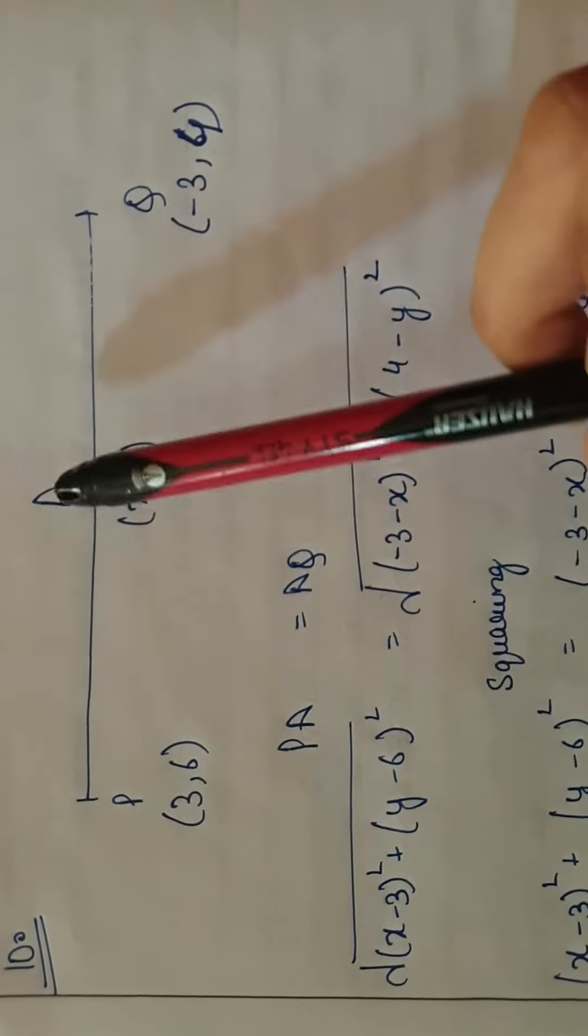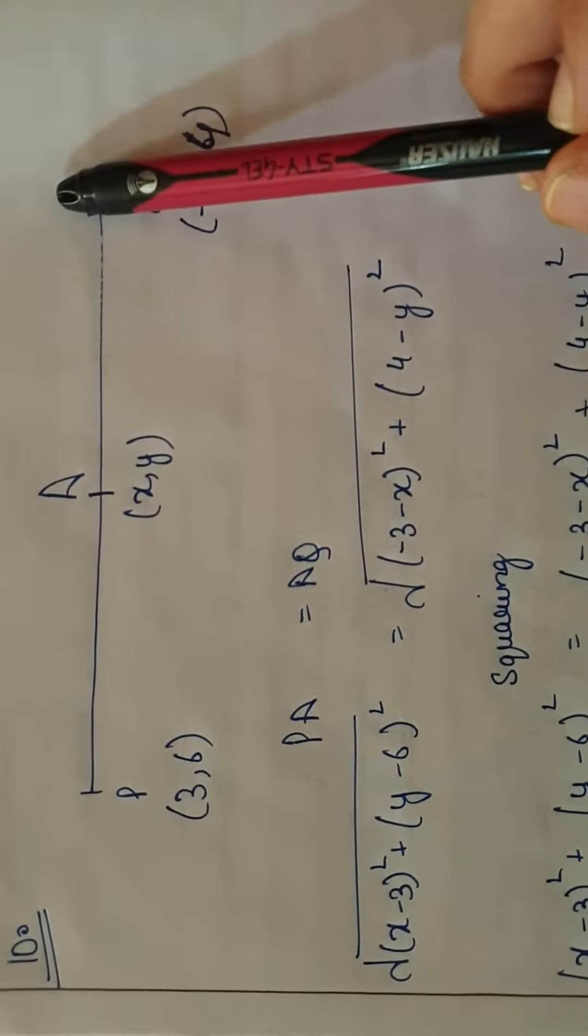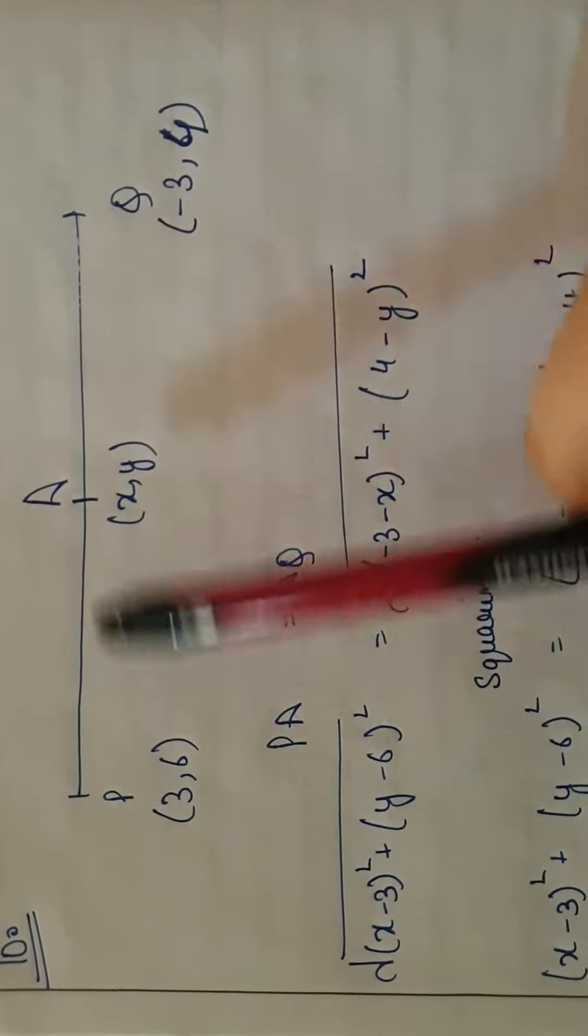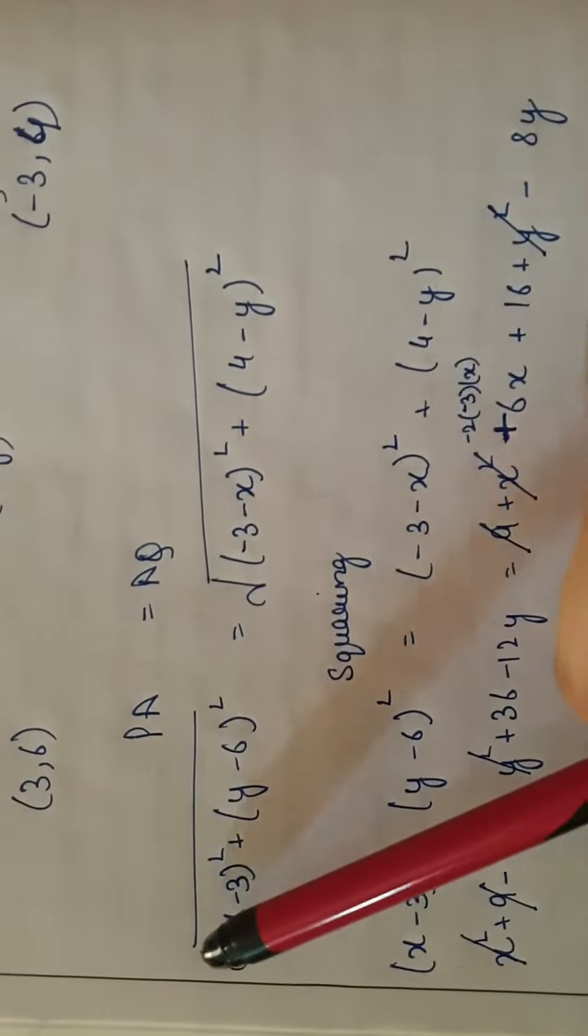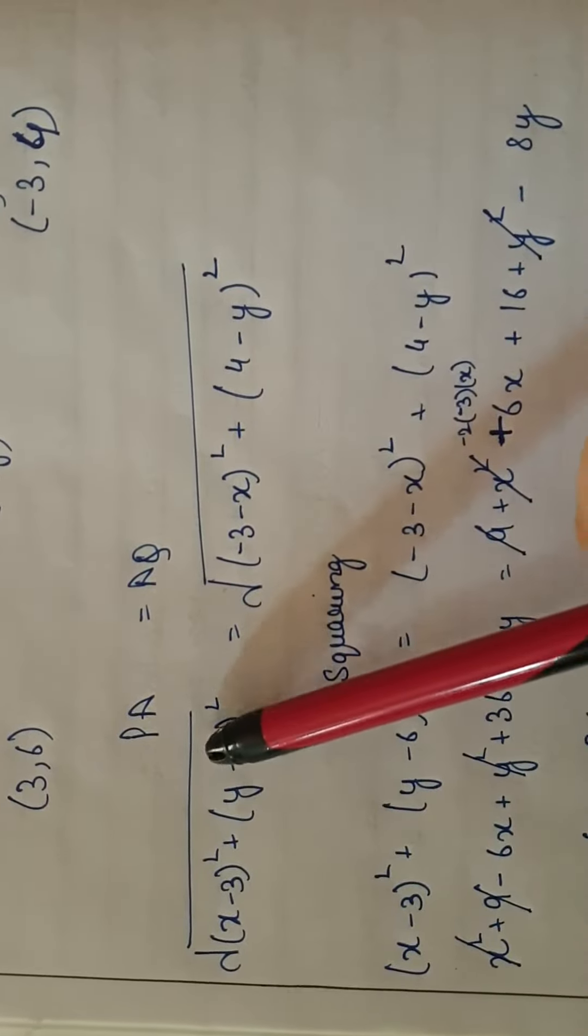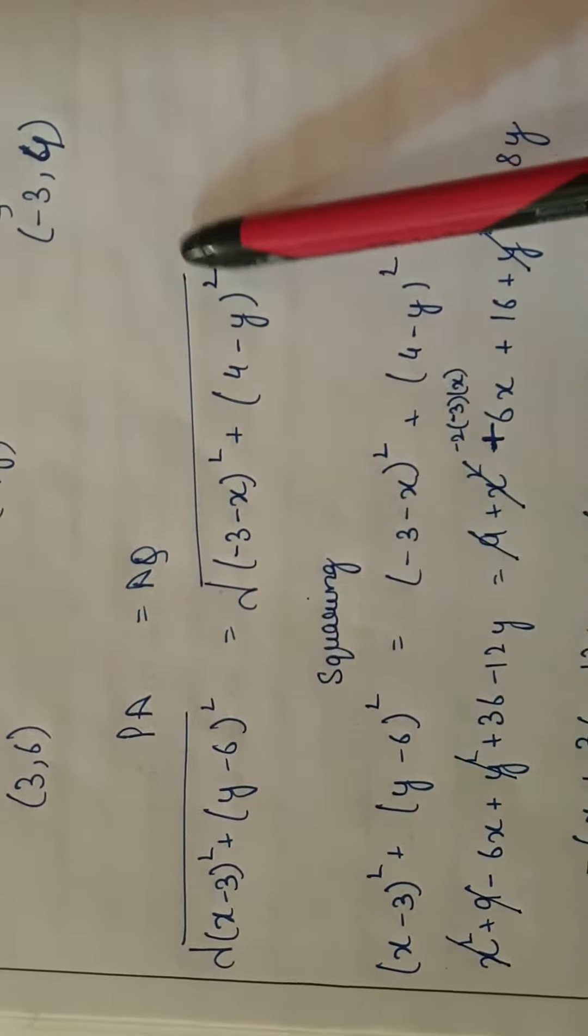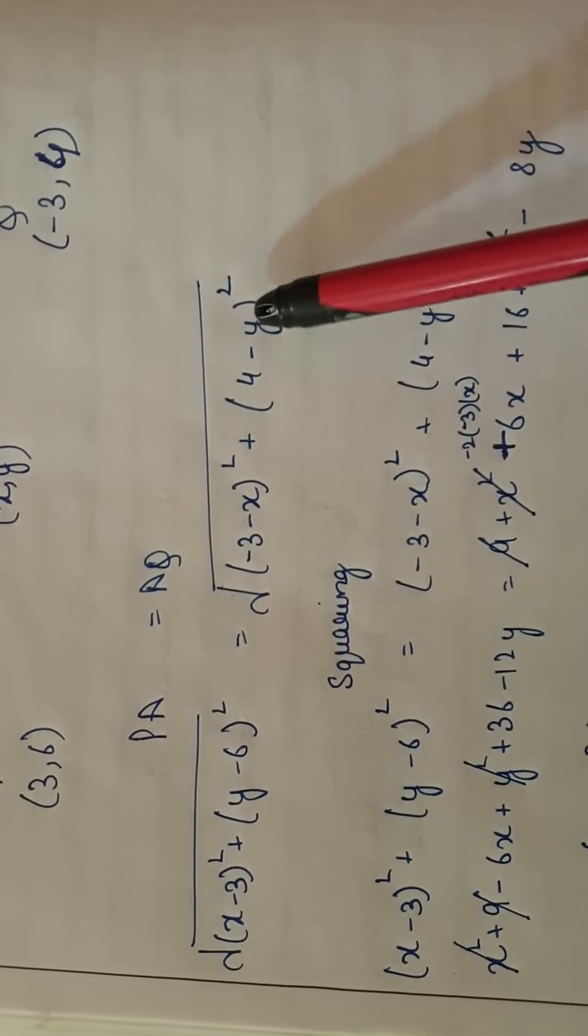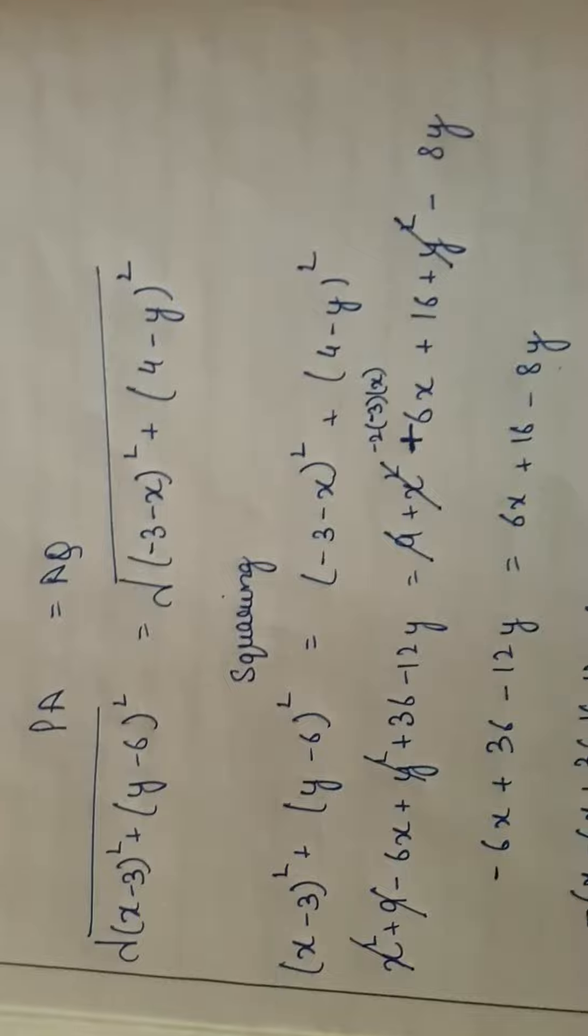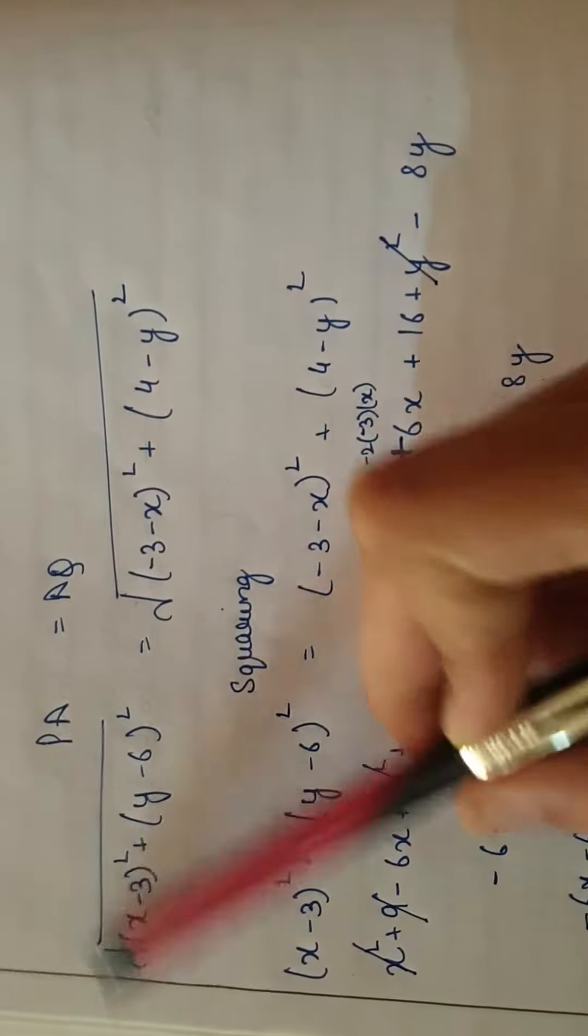This equidistant means PA equals AQ. We can apply the distance formula. Since the distances are equal: (x2-x1)² + (y2-y1)² equals (x2-x1)² + (y2-y1)². Squaring both sides removes the square roots.